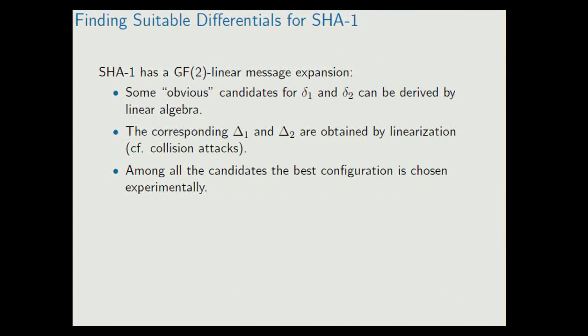Just very quickly, for SHA-1, it seems to be the hard part to find these differentials. But for SHA-1, in fact, it's not that difficult because this GF(2) linear message expansion facilitates things a lot. Without going into the details, because this message expansion is linear, you can find a relatively small set of obvious candidate message differences, δ1 and δ2, just by linear algebra. And the corresponding correcting output differences, you can find them by linearizing the step transformations. This is also a common technique in differential collision attacks. And among all these candidates, you can do a simple experimental search to find the best one, which gives you the attack parameters.